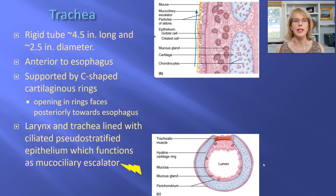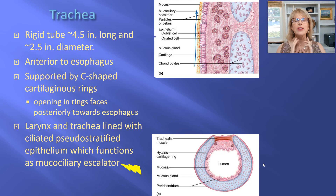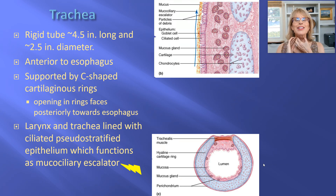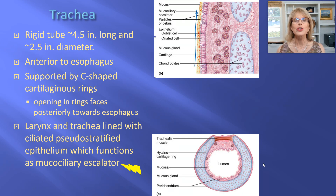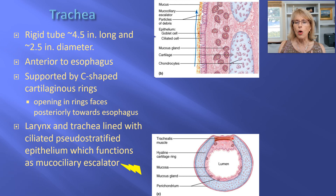The trachea is what we often call the windpipe. It's not as long as you might imagine — only about four and a half to five inches long. It sits in front of the esophagus, which hides behind it. The trachea is propped open by rings of cartilage shaped like the letter C, with the open area of the ring facing backwards.